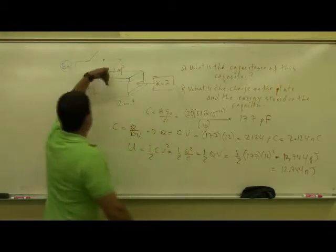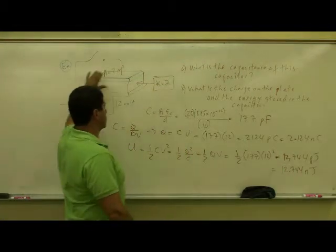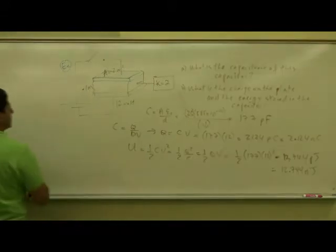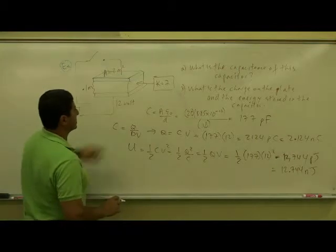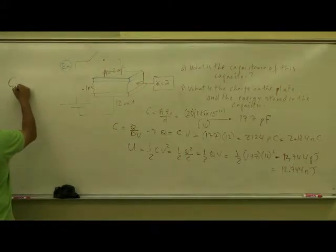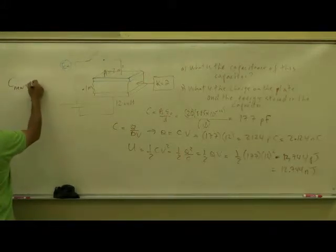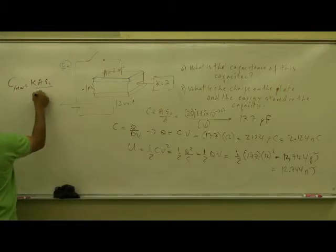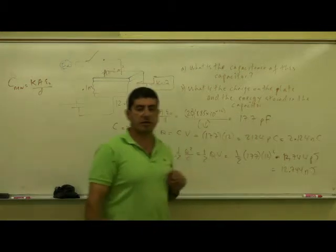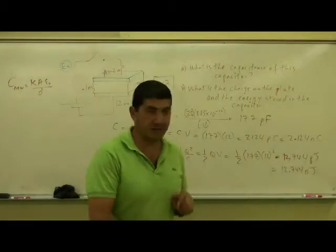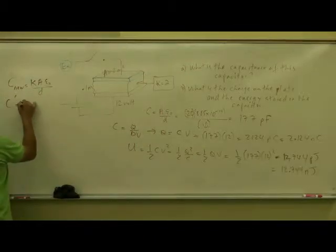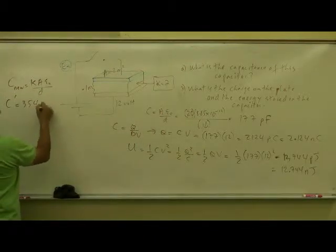Now I disconnect the battery. I insert the dielectric in there. So what's going to happen? Well, when I insert the dielectric, the capacitance is going to go up by a factor of kappa. So C new is going to equal kappa A epsilon naught over D. So essentially the capacitance is doubling. 177 double 354, right? So we can call that C prime. 354 picofarads.